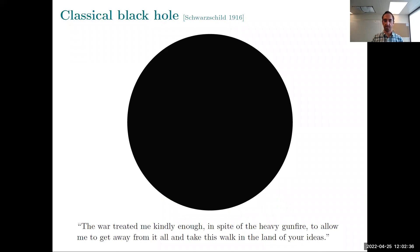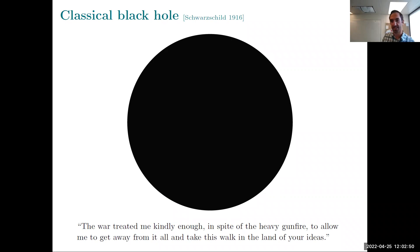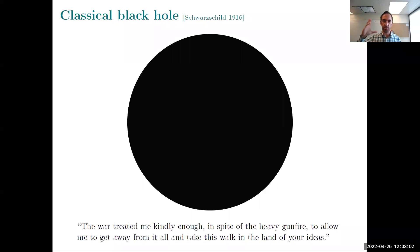Let me quickly review some basics of black holes. Here is a classical black hole — a Schwarzschild black hole. Here's a quote from a letter Schwarzschild wrote to Einstein at the end of 1915. The word did not treat him kindly; he was dead less than a year later. But here's the solution he found, and it's pretty boring. All the exciting things we see about black holes have to do with how a black hole interacts with its environment. If you remove a classical black hole from its environment, it wouldn't do anything — it would just sit there.